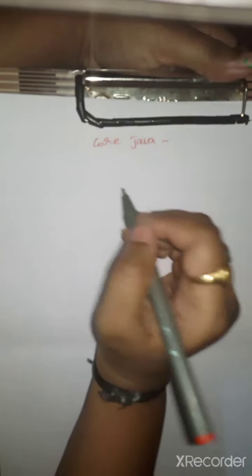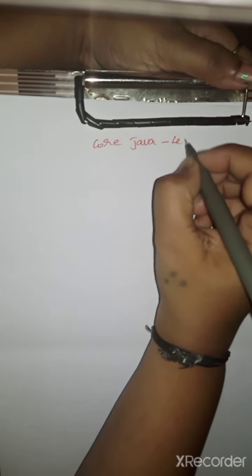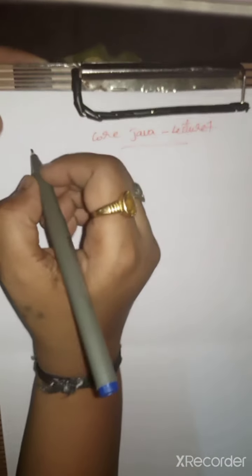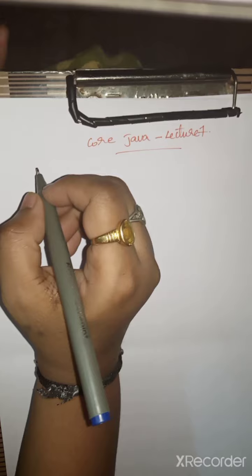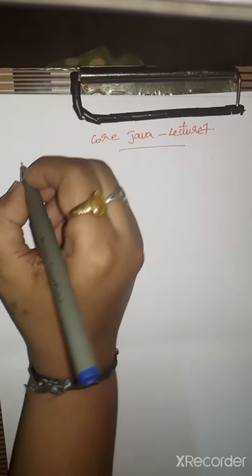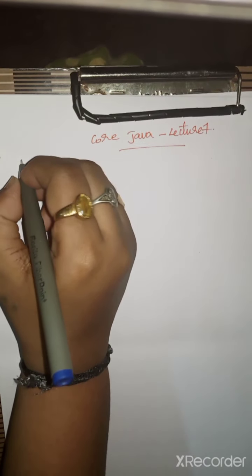Good morning. Welcome to Core Java Lecture 7. I was explaining OOP concepts - you have learned about abstraction, encapsulation, and inheritance. Today I will explain polymorphism.